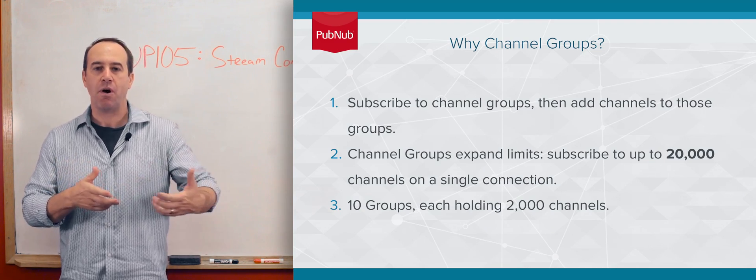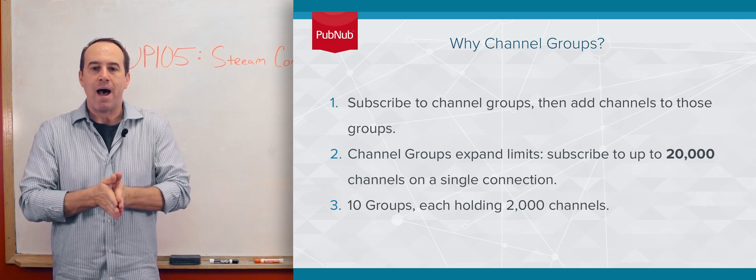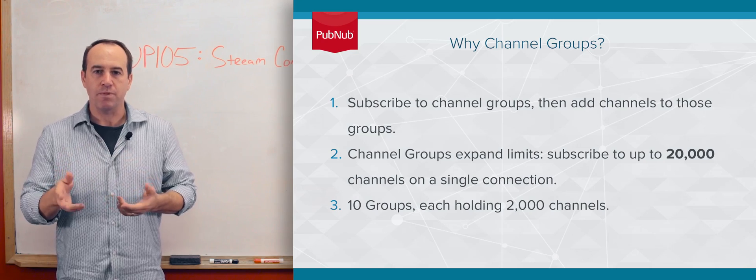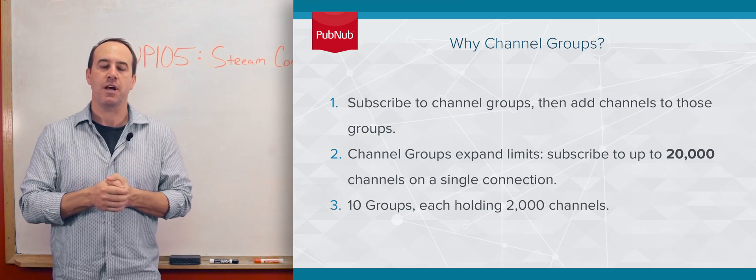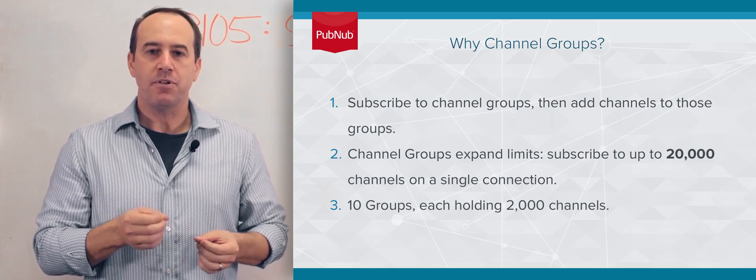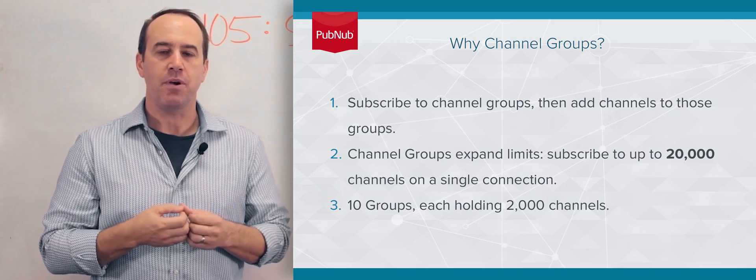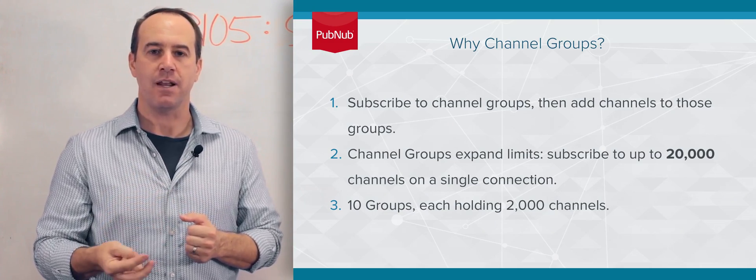Whether that's practical for your application or not is up to you. But the way you go about it is you subscribe to Channel Groups and you add channels to those Channel Groups. So with Channel Groups, you can actually subscribe up to 10 different Channel Groups per connection. And in each Channel Group, you can have up to 2,000 channels.